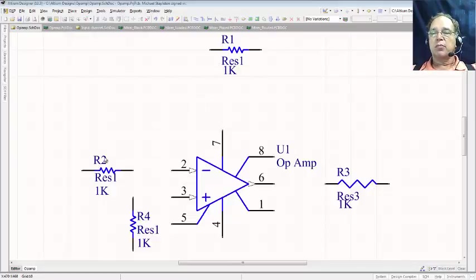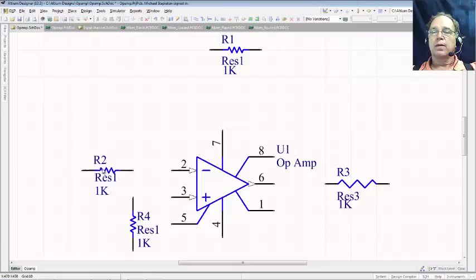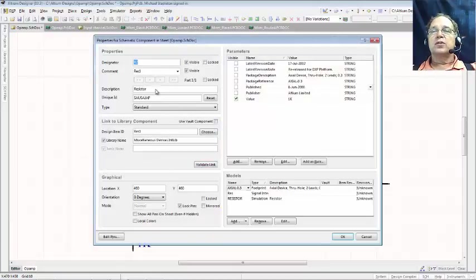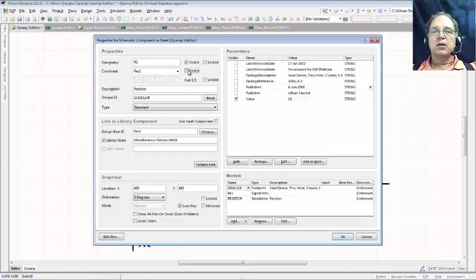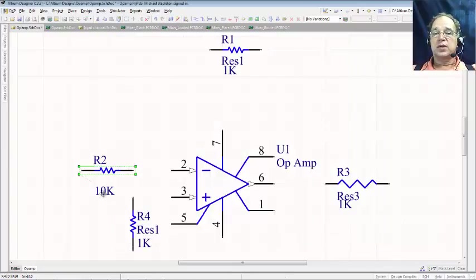We have our parts numbered R1, R2, R3, and R4, but we'll notice that they all say 1K. We can change that, and let me show you how. I'm going to double click my part here, and I'll see my parameters and properties of this part. Right here it says comment resistor1, that's the library name, and it says visible. I don't want to see that anymore, so I'm going to click it, make it invisible. Value, I want to change to 10K, and then I tell it OK, and there I have R2, 10K.